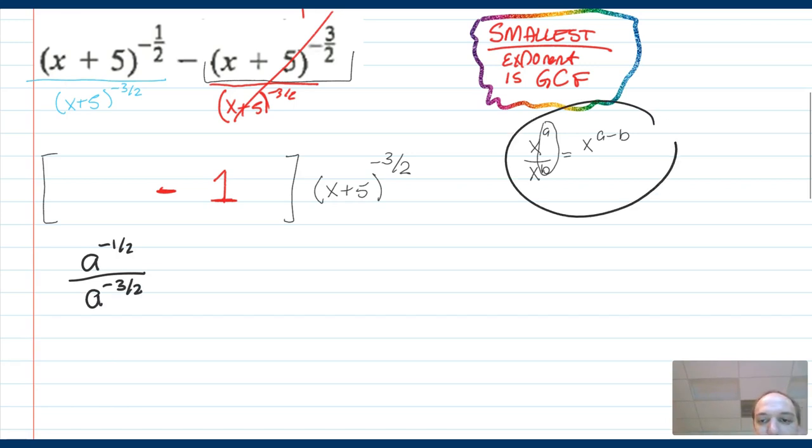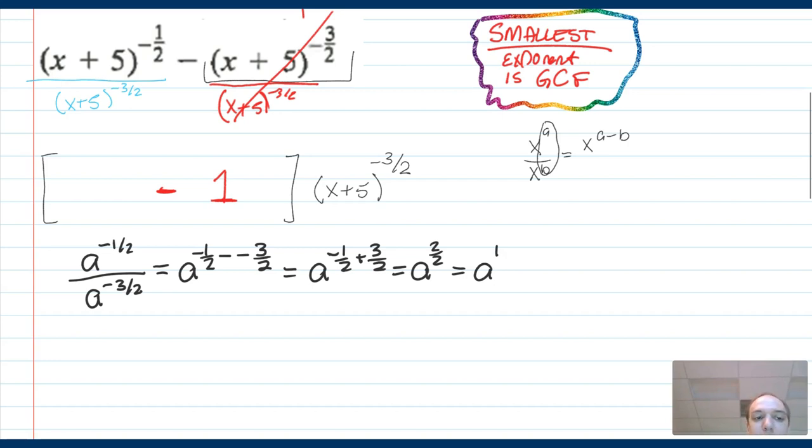If I have, I'm going to just do a substitution. Instead of writing x plus five, I'm just going to write a to the negative one half divided by a to the negative three halves. The exponent rule says that this would be the same as a to the negative one half minus negative three halves. Notice there's a double negative situation going on here.